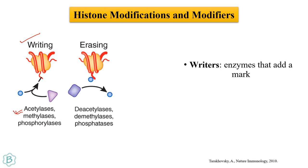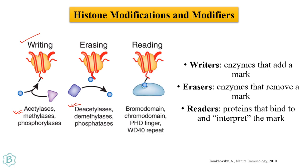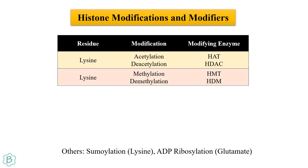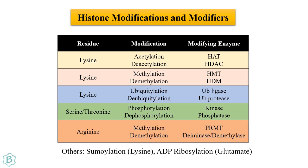Erasers are enzymes that remove the mark — those are deacetylases, demethylases, or phosphatases. Readers are the proteins that read and interpret the mark, and based on that the function is going to happen. Reader proteins contain domains like bromodomain, chromodomain, PHD finger, or WD40 repeat.